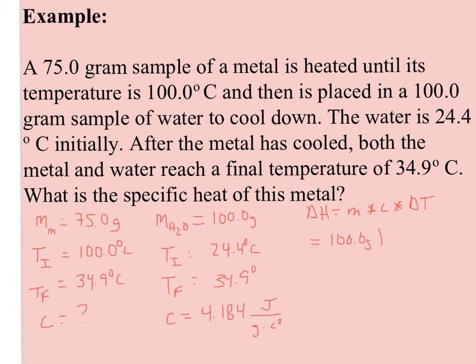100 grams of water, specific heat of 4.184, temperature change of 10.5. So if I calculate this, I have 100 grams times 4.184 times 10.5, which is a change in heat of 4,393.2 joules. This is my ΔH for my water, but this should also be ΔH for my metal.